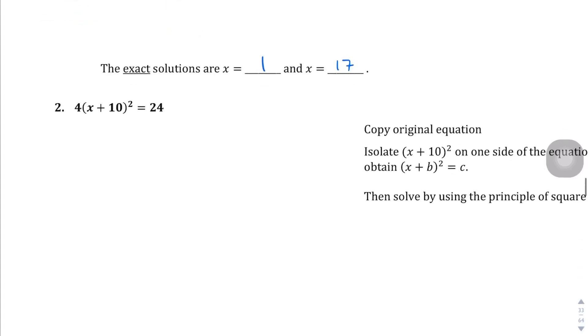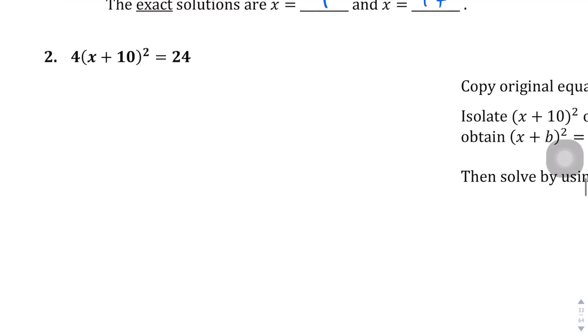Okay. Question number 2. So, again, we're going to divide both sides by 4 first. 4 by 4. So we get x plus 10 squared equals 6.